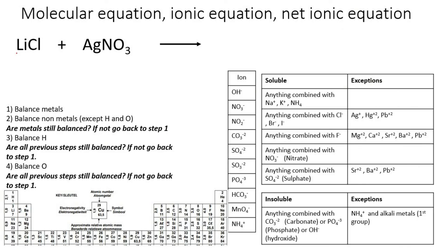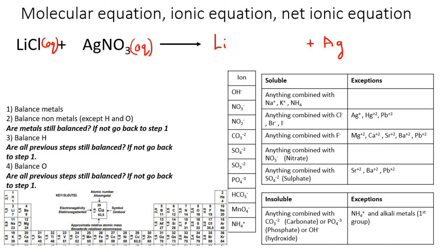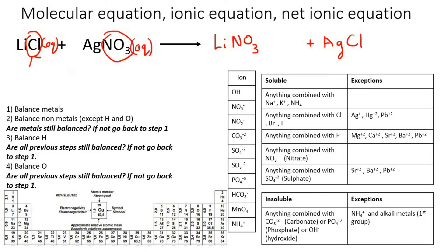Here's our next example. We know the starting reactants are aqueous — LiCl is aqueous because anything combined with chlorine is soluble unless it's one of the exceptions, and we don't have any of those. Any nitrate is soluble, so AgNO3 is aqueous. To work out the products, you put the two metals Li and Ag, then take the anions and switch them — so NO3 goes with Li and Cl goes with Ag. We check the valencies: lithium is group 1 so positive 1, nitrate is negative 1, and silver must be remembered as positive 1, chlorine is negative 1. All balanced.